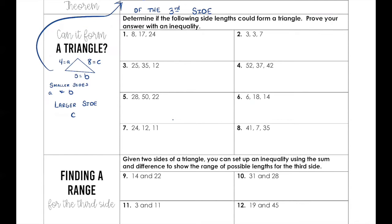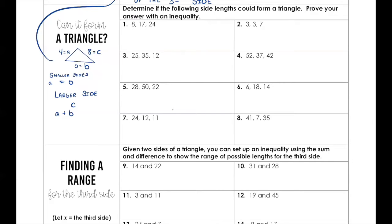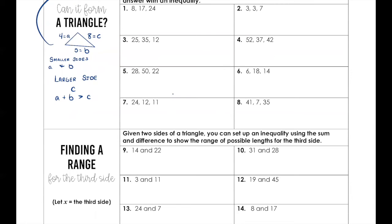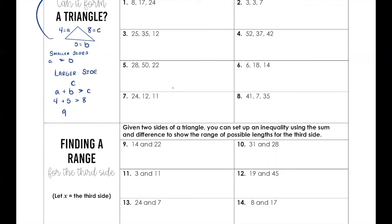So using the theorem, A plus B must be greater than C. The gator always eats the bigger number. If that is not true, then it's not possible to have a triangle — the lengths won't add up. Let's check: 4 plus 5 is 9. Is 9 greater than 8? Yes. So that can be a triangle.